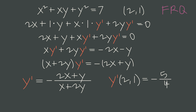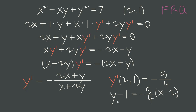Sometimes we're also asked to find the equation of the tangent line, not just the slope. We write it in point-slope form: y − y₁ = m(x − x₁). We plug in slope m = −5/4 and the point (2, 1), giving y − 1 = −(5/4)(x − 2). This is the equation of the tangent line at the point (2, 1).